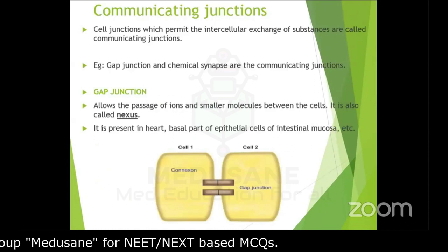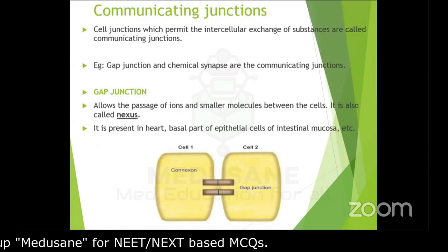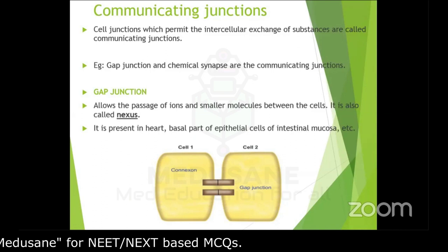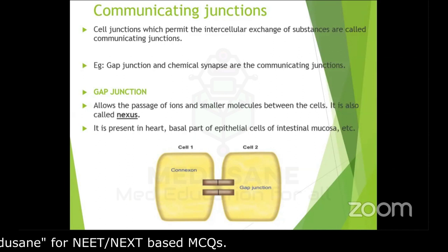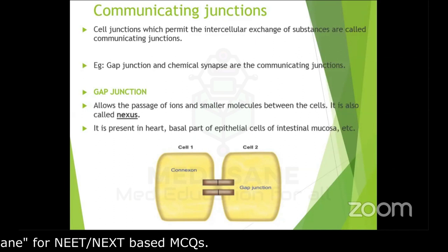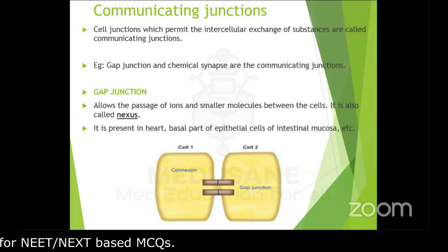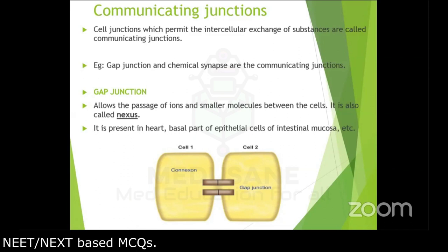Now moving to communicating junctions — the second classification. A communicating junction is a cell junction that permits the interchange of substances between cells; these junctions permit the movement of ions and molecules from one cell to the other. Under communicating junctions we have gap junctions. A gap junction is an intercellular junction that allows passage of ions and smaller molecules between cells. It is also called nexus.